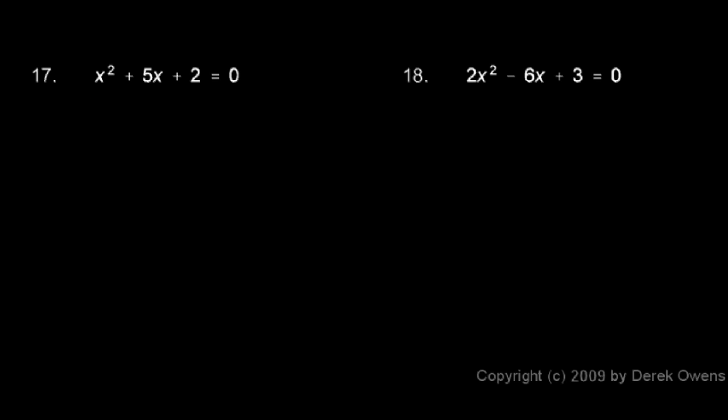This x squared, you need to think of that as 1x squared. There's a coefficient of 1 right there. It's not 0, it's 1. So a is equal to 1, b is equal to 5, and c is equal to 2.